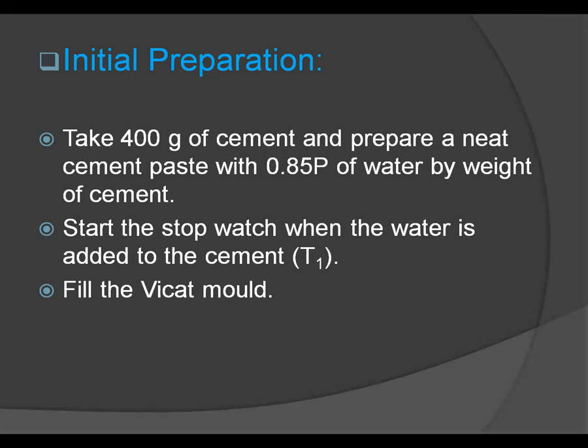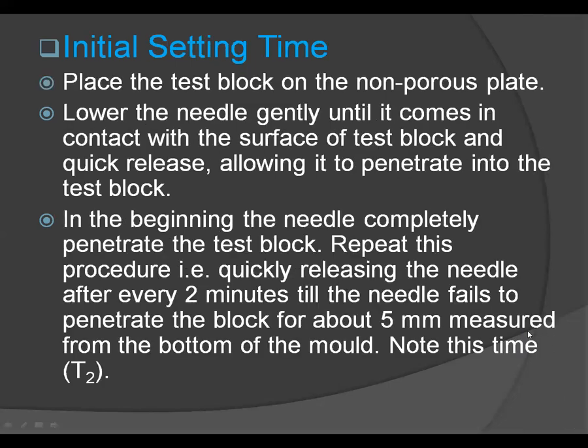To carry out the initial setting time test, place the test block confined in the mould and resting on the non-porous plate under the rod bearing the needle. Lower the needle gently until it comes in contact with the surface of the test block, then quickly release it, allowing it to penetrate into the test block. Repeat this procedure every 2 minutes until the needle fails to penetrate the block to about 5 mm from the bottom of the mould. Note this time as T2.